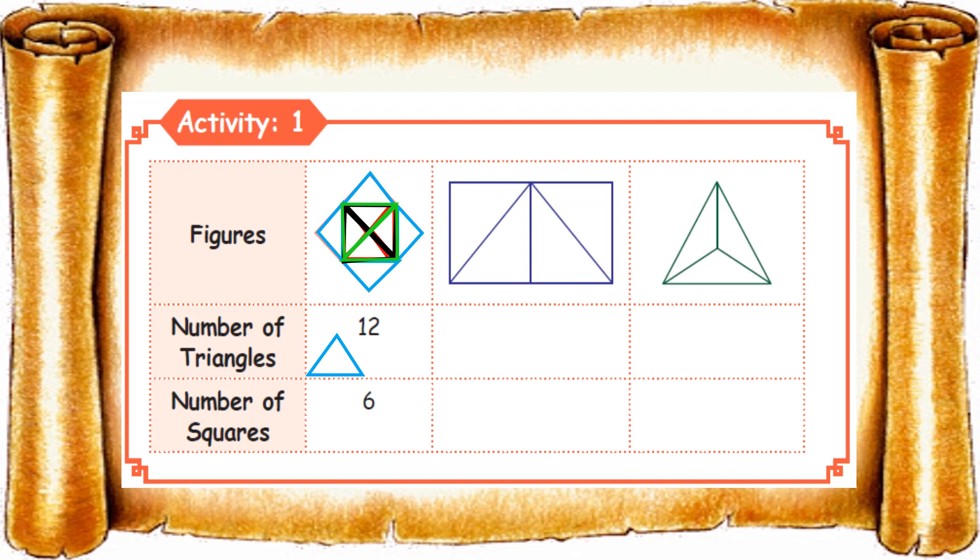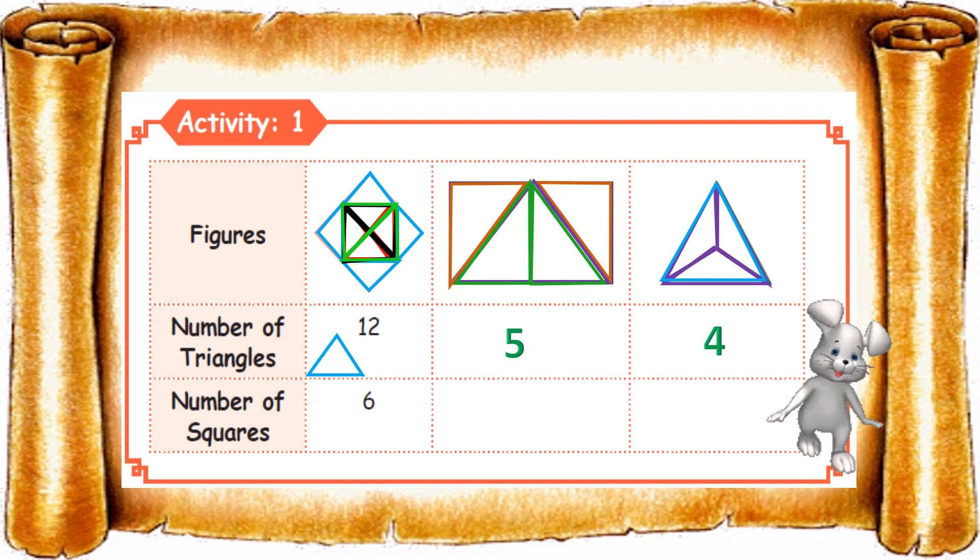Based on this we'll find the next figures. For the second figure: one, two, three, four, five. So five is the answer. For the third figure: one, two, three, and overall one more triangle, four. So this will be the answer.